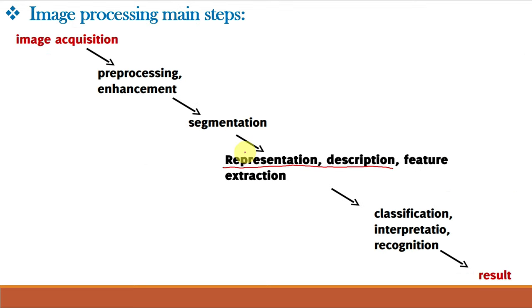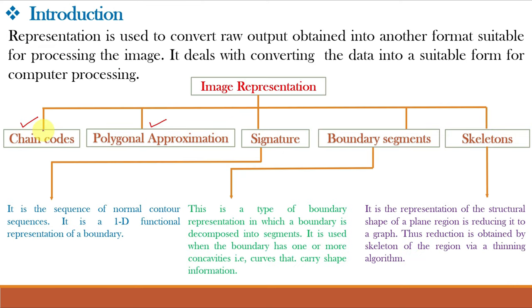So let us start. As we discussed in the previous video class also, we are currently learning image representation and description out of these main steps of digital image processing. And in the previous video classes, we have already learnt chain codes and polygonal approximation.